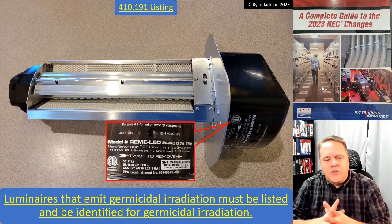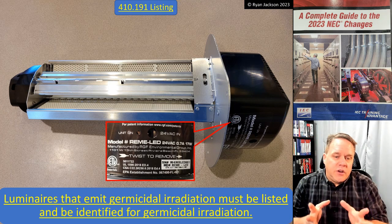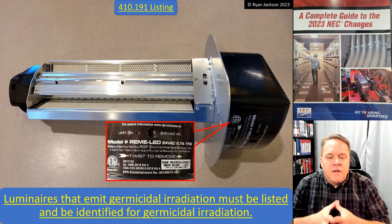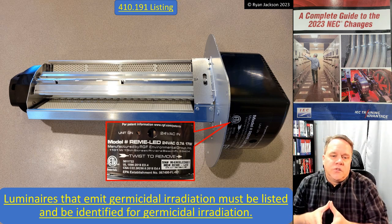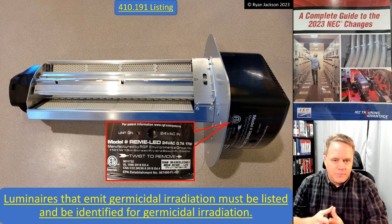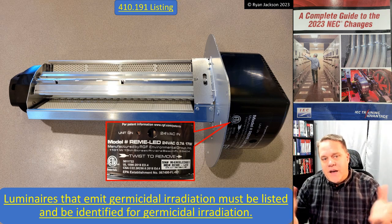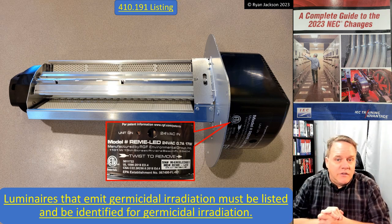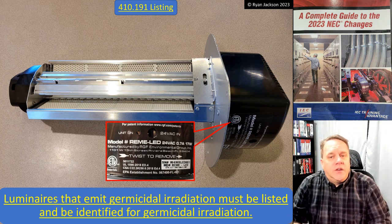To summarize: luminaires that emit germicidal irradiation must be listed and be identified for germicidal irradiation. That is your new Part 17 of Article 410 — germicidal irradiation luminaires.